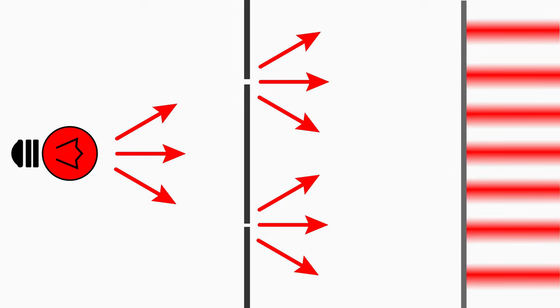What you see here on the screen is a typical behavior of waves. If you would bombard the double slit with any kind of particles, you would never get such a pattern.